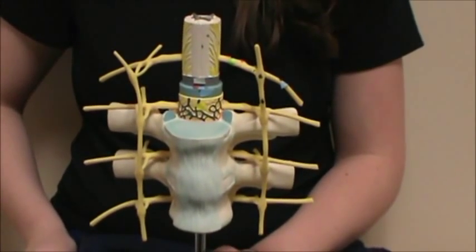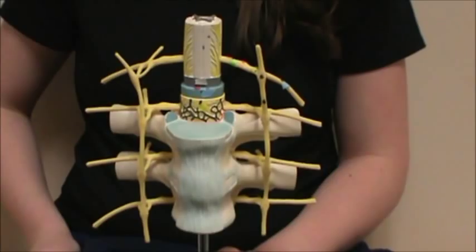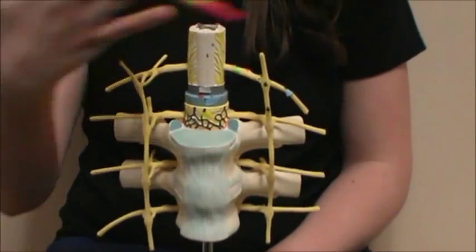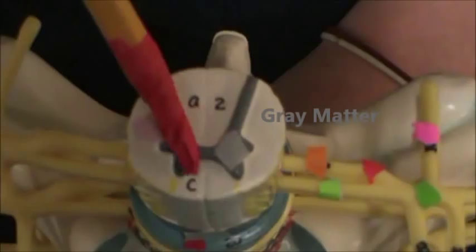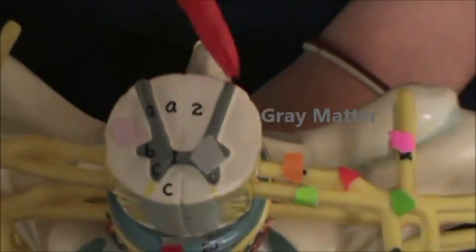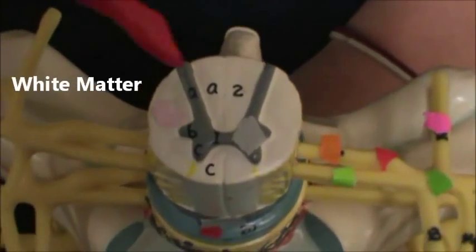This is a video of the spinal coordinate structures. Right now we're looking at an anterior view. We're going to come up here and identify these structures. In gray we have the gray matter. In pink we have the white matter.